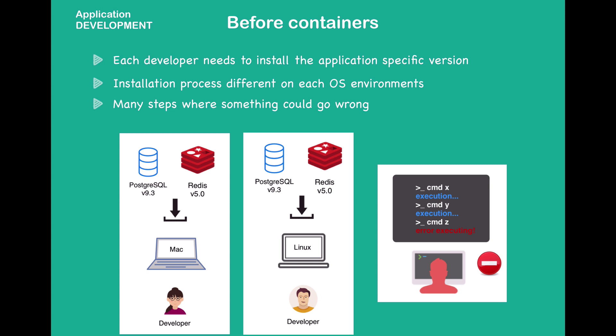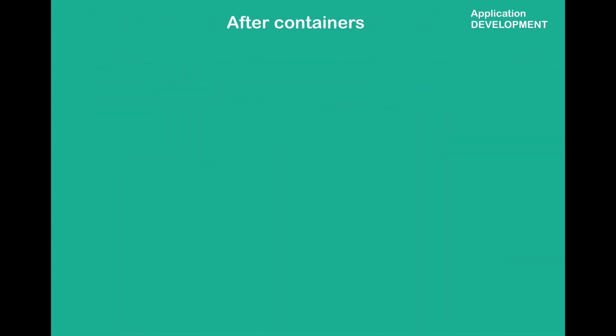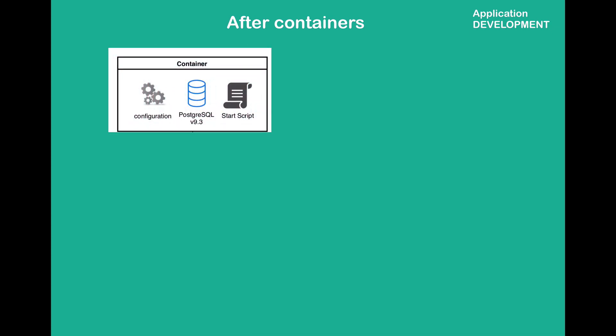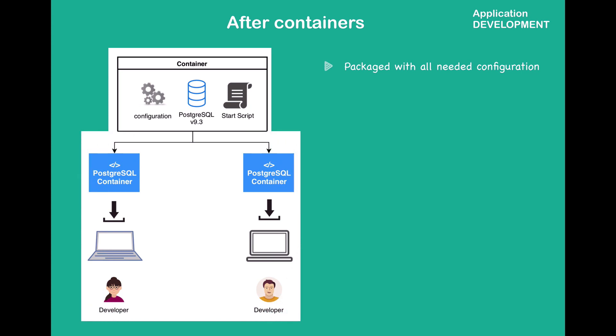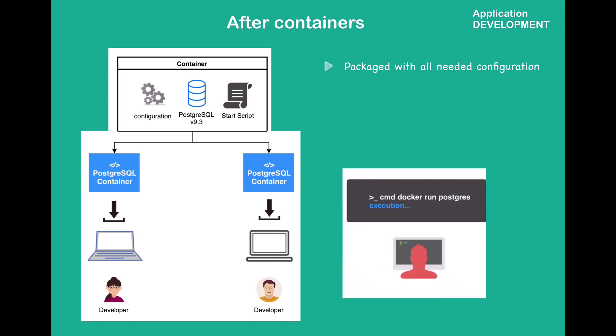With containers, you don't have to install any services directly on your operating system because the container is its own isolated operating system layer with a Linux base image. You have everything packaged in one isolated environment — PostgreSQL with a specific version, configuration, and start script inside one container. As a developer, you just go to the container repository, find the specific container, and download it to your local machine. The download step is just one Docker command, which fetches the container and starts it at the same time.